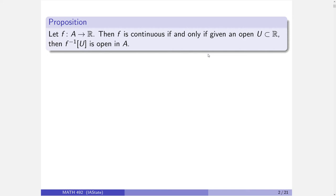Even thinking of calc 3, I talk about continuous functions there, but the inputs aren't real — they're multivariable. So what does continuity mean in that case? There are multiple settings for continuity to be studied. So we're going to make the first step here of going: hey, you can talk continuity and it doesn't need to only involve real numbers. This proof we're about to do here sends us in the right direction. So let's get into it.